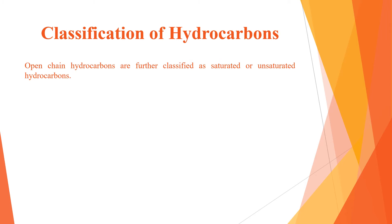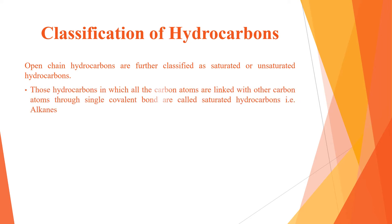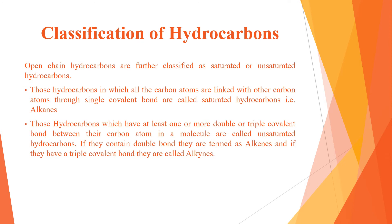Open chain hydrocarbons are further classified as saturated or unsaturated. Those hydrocarbons in which all the carbon atoms are linked with other carbon atoms through a single covalent bond are called saturated hydrocarbons. All alkanes are examples of saturated hydrocarbons.